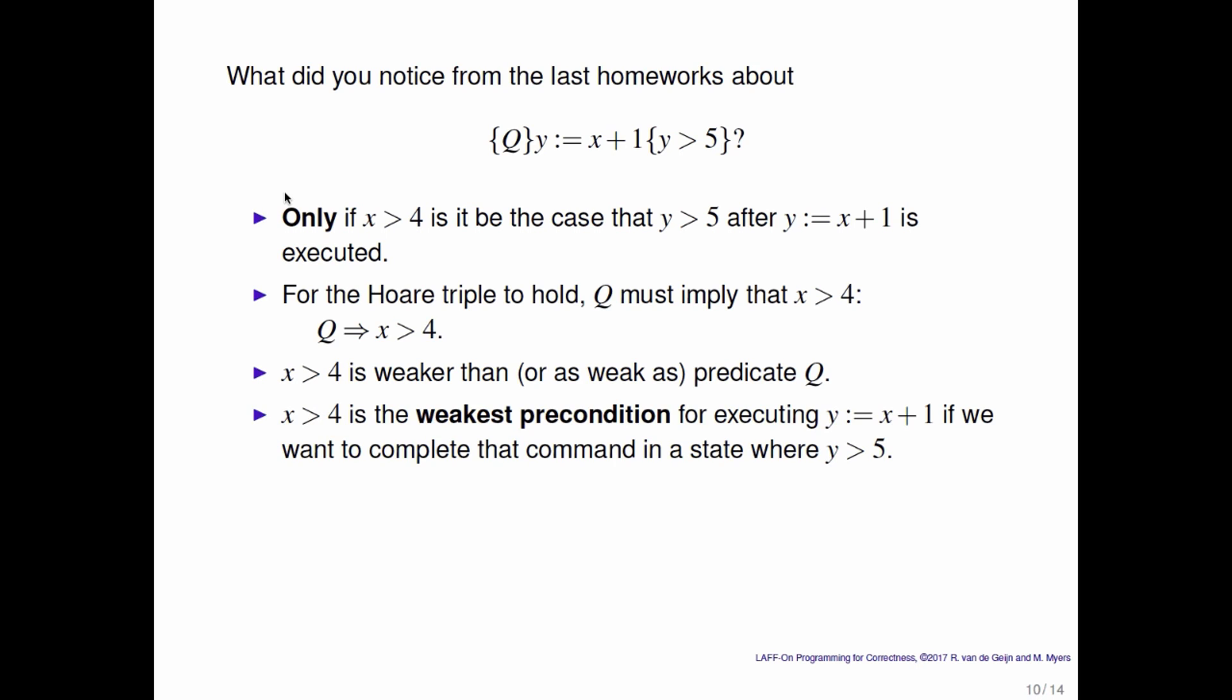So because every precondition Q must imply x is greater than 4 in order for the Hoare triple to be true, we say that x greater than 4 is the weakest precondition for executing y becomes x plus 1 if we want to complete the command in a state where y is greater than 5.